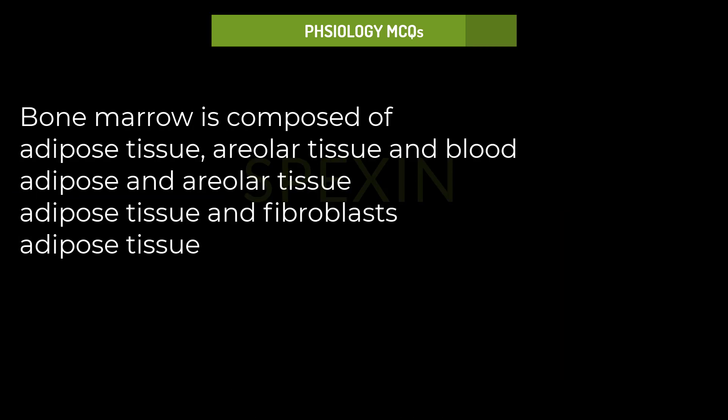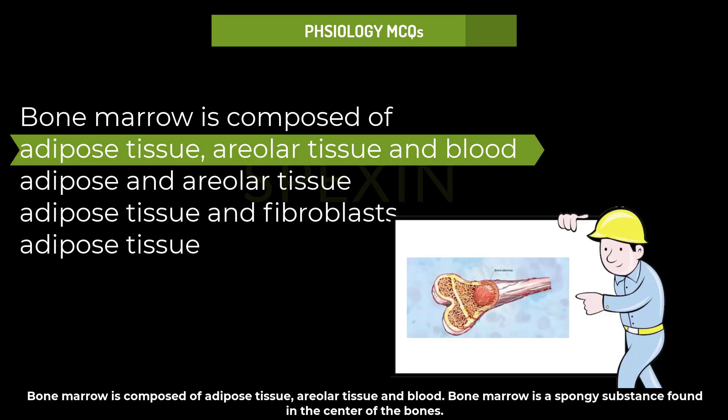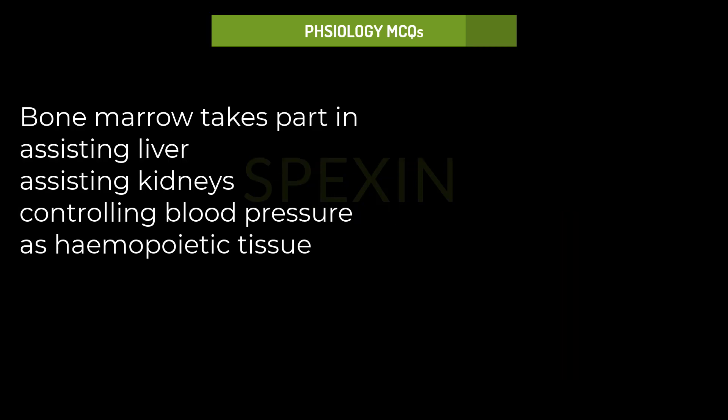Bone marrow is composed of: adipose tissue, areolar tissue and blood; adipose and areolar tissue; adipose tissue and fibroblasts; or adipose tissue only? Bone marrow is composed of adipose tissue, areolar tissue, and blood. Bone marrow is a spongy substance found in the center of the bones.